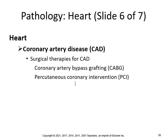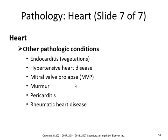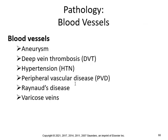Surgical therapies for CAD include coronary artery bypass grafting (CABG). Other pathological conditions include endocarditis, hypertensive heart disease, mitral valve prolapse, murmurs, pericarditis, and rheumatic heart disease. Blood vessel conditions include aneurysm, DVT, hypertension, peripheral vascular disease, Raynaud's phenomenon, and varicose veins.